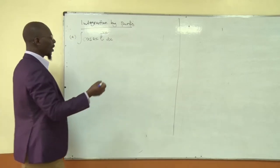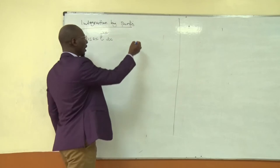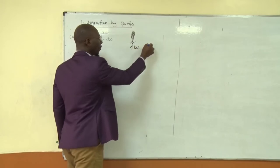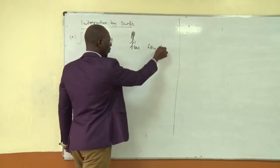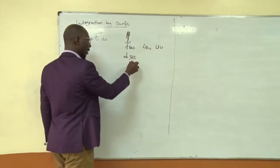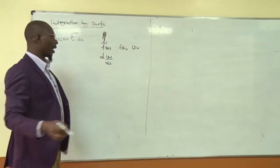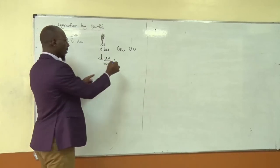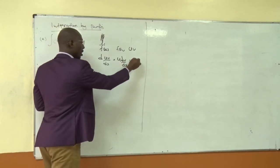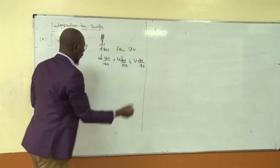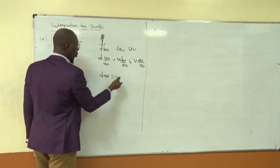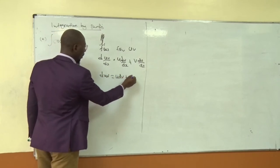From the product rule of differentiation, if you differentiate a product of two functions — that is f(x) equal to u times v — to get its derivative d(uv)/dx, where u and v are functions of x, you hold one part and differentiate the other. You hold u and get dv/dx, then hold v and get du/dx, then sum them. Multiplying both sides by dx, you get d(uv) = u·dv + v·du.